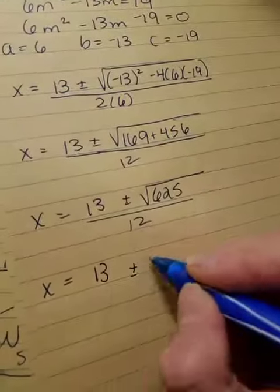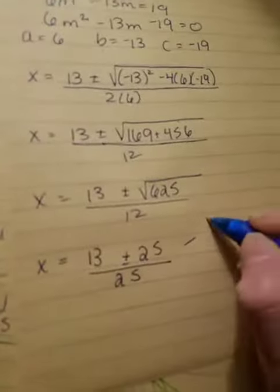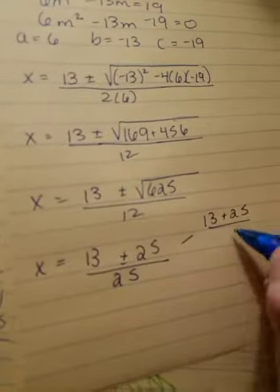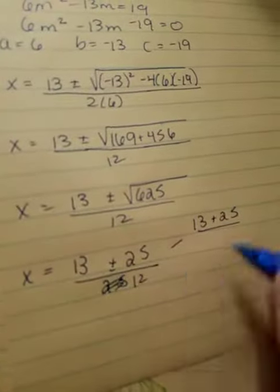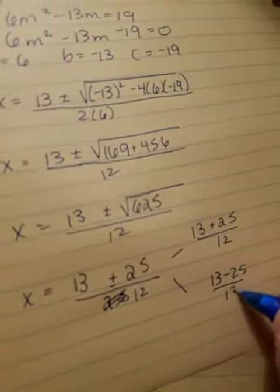So this is 13 plus or minus 25 over 12. Remember, that means you have 13 plus 25 over 12, and you have 13 minus 25 over 12.